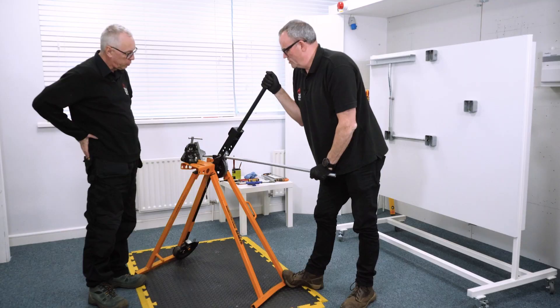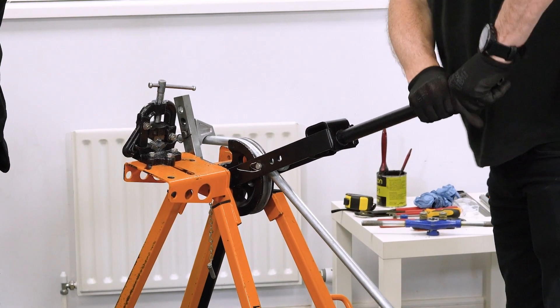Metal conduit is harder to use, and you will need a conduit bending machine to form it and shape it how you need.